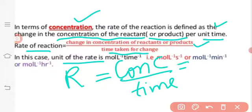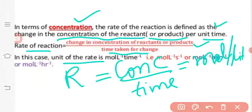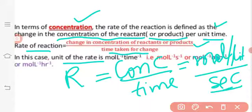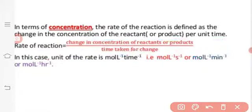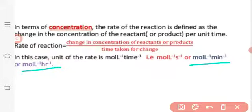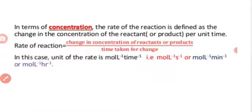Concentration is in moles per liter, divided by time in seconds — giving moles per liter per second. Or it can be moles per liter per minute, or moles per liter per hour, depending on the time unit used.